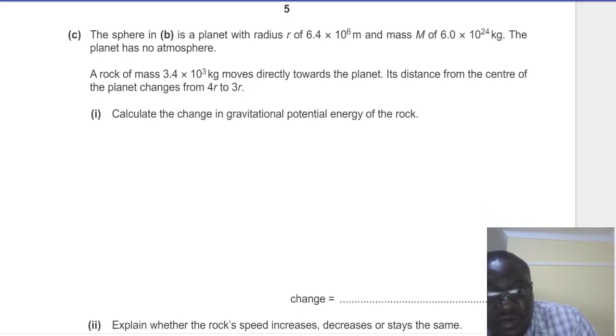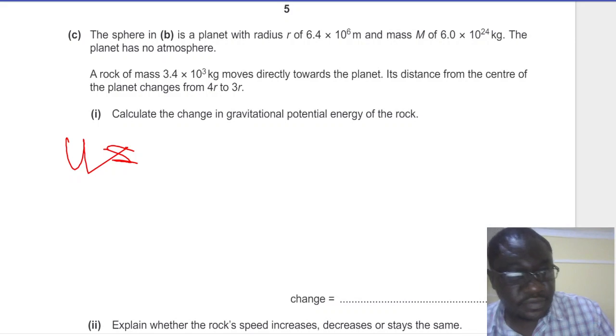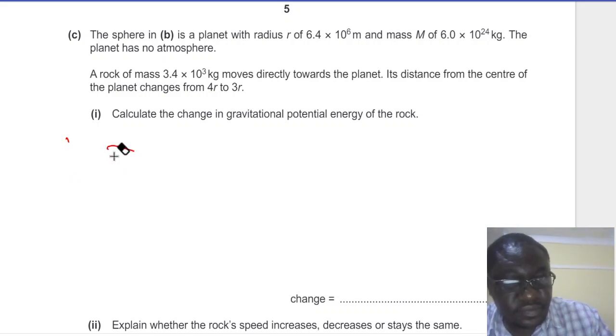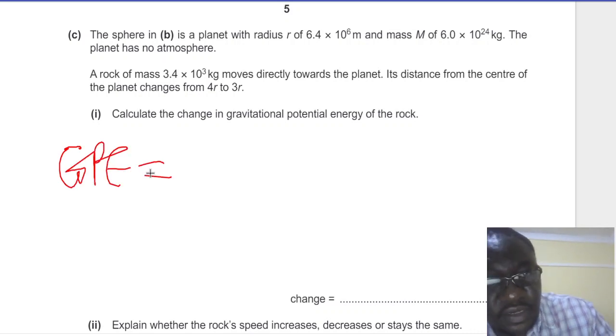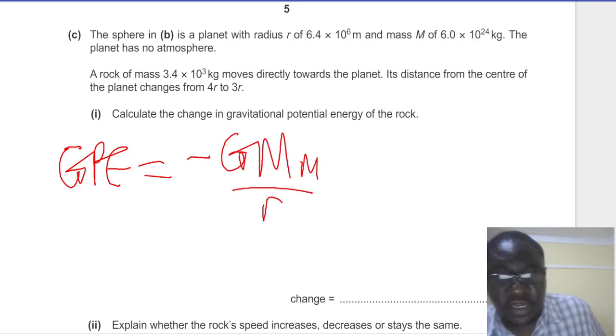Now the formula for gravitational potential energy, let's just call it GPE, is going to be equal to minus G big M small m over R. That is the formula.